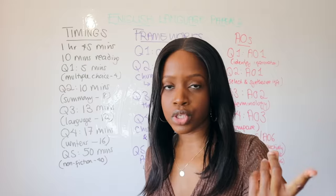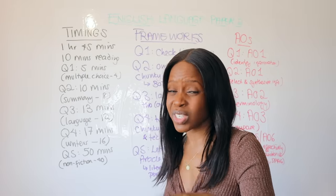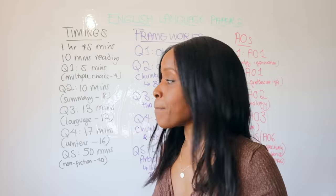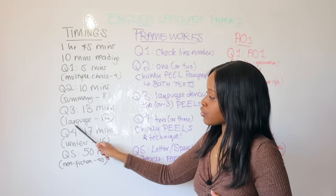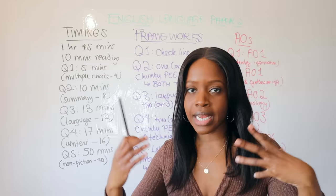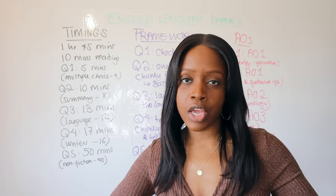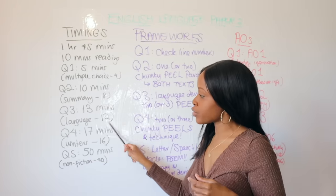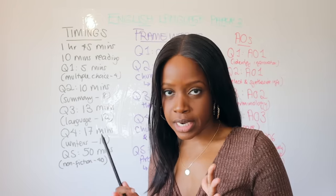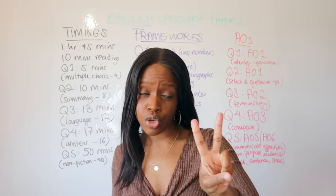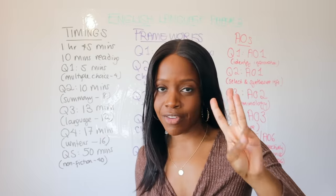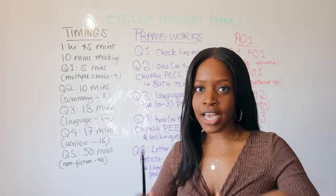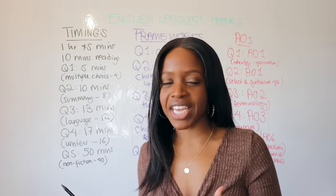Question Three should come as a little bit of a relief because you're asked to look at just one source — either the modern or the Victorian source. It's similar to Question Two of Language Paper One, asking how the writer uses language to show whatever the keywords in the question specify. This question is worth 12 marks, so spend 13 minutes on it and aim to write at least two PEEL paragraphs, if not three.